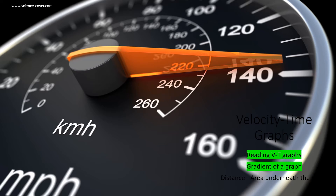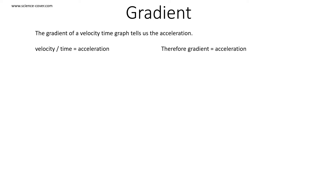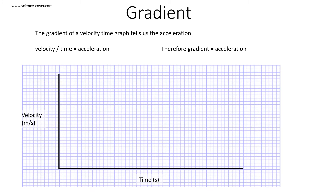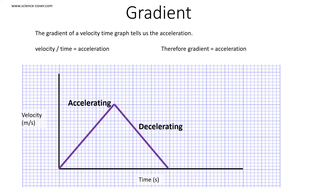Let's now look at how we can calculate the gradient of a graph. The gradient of a velocity time graph tells us the acceleration. As we have velocity on the y-axis and time on the x-axis, when we work out the gradient, we do a change in the y-axis divided by the change in the x-axis. This is a change in velocity divided by a change in time, which is equal to acceleration. Therefore, the gradient is equal to acceleration. In an accelerating object we see an increase in line, and for a decelerating object we'll see a decreasing line.